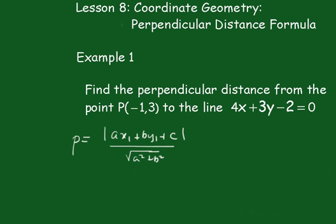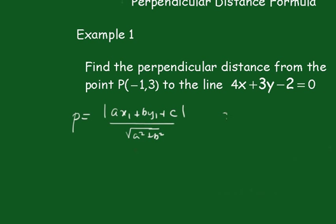Now very carefully, we say that x1 is equal to negative 1 and y1 is equal to 3. My a is equal to 4 — the coefficient of x. The b is 3, and c equals negative 2.